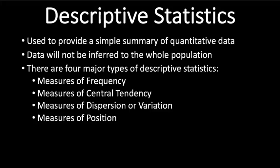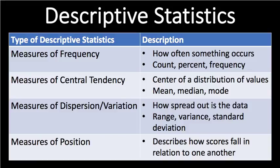There are four major types of descriptive statistics. First, measures of frequency — how often did something occur? For example, how often do people brush their teeth twice every day? You can get a percentage from it.